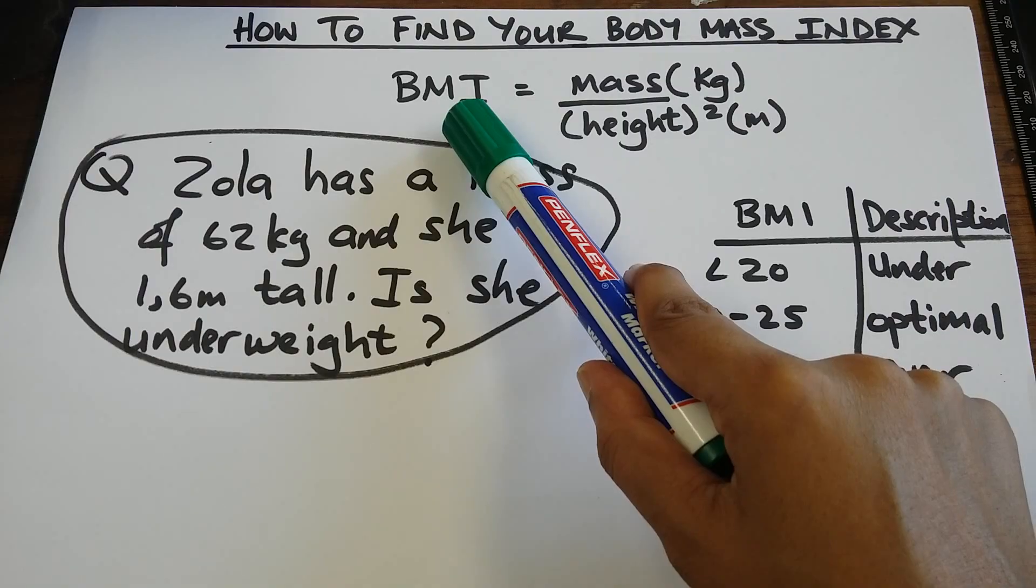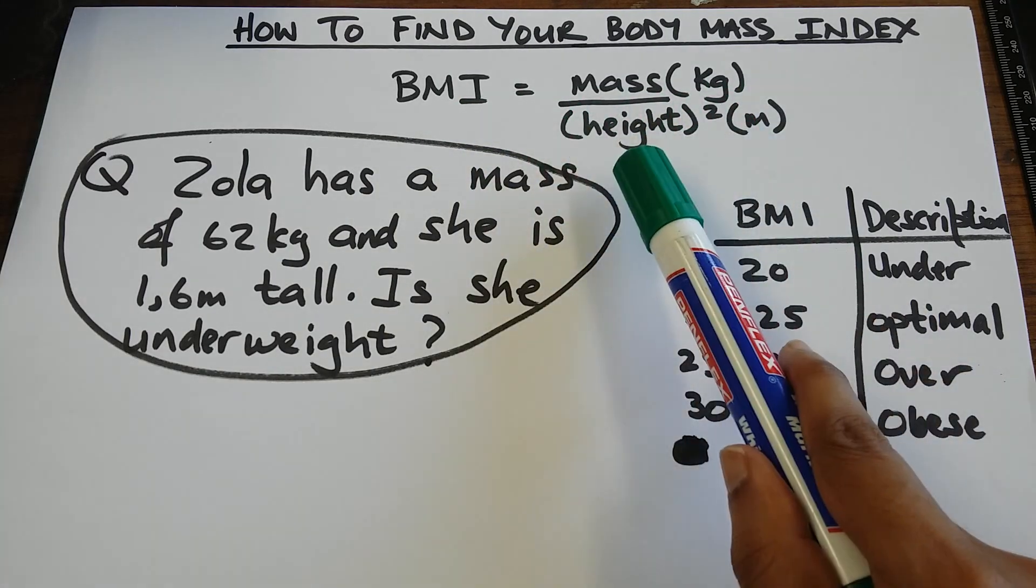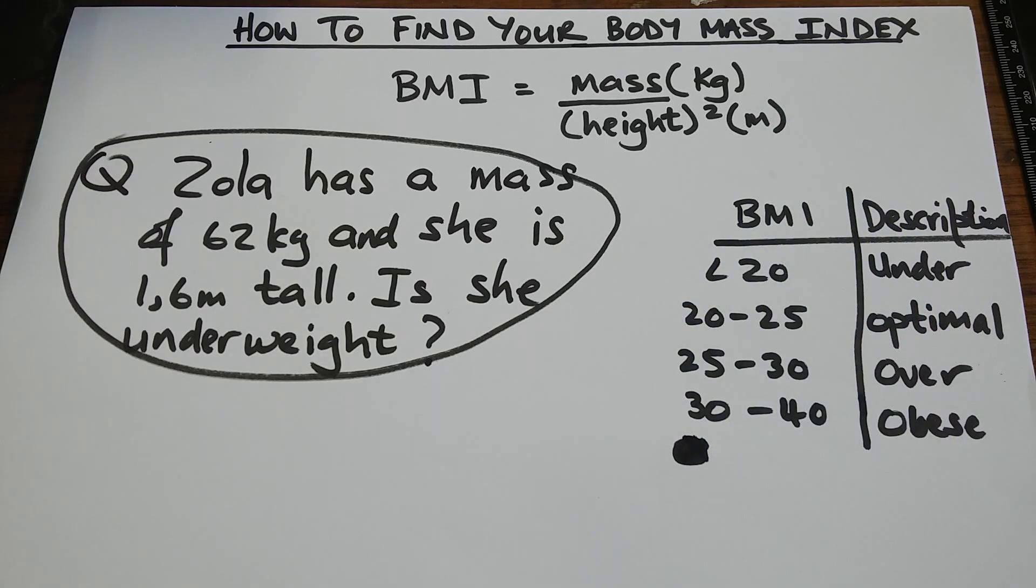So, BMI is equal to mass. We will take mass in kg divided by height square. Our height is going to be in meters.